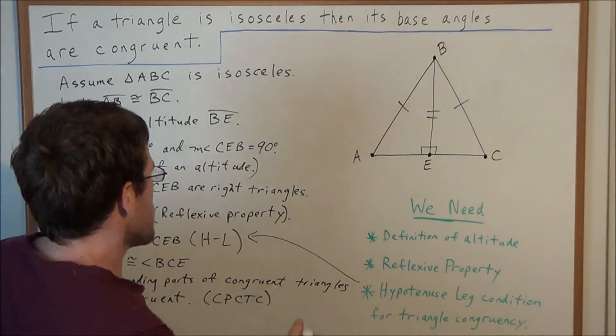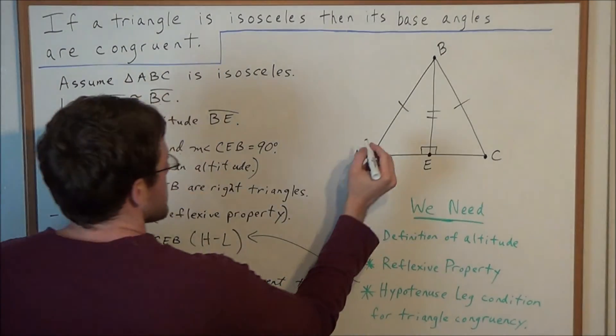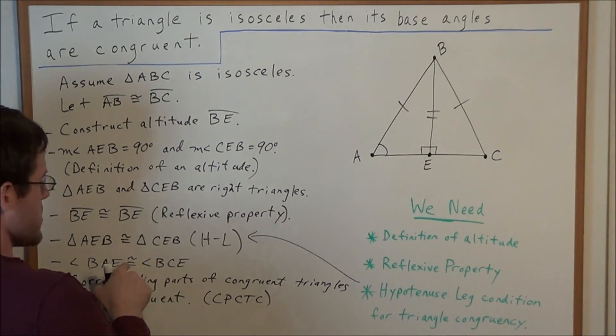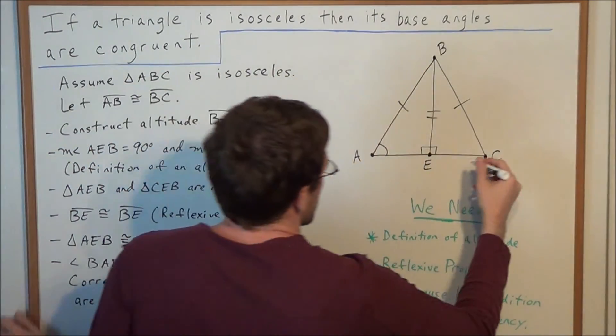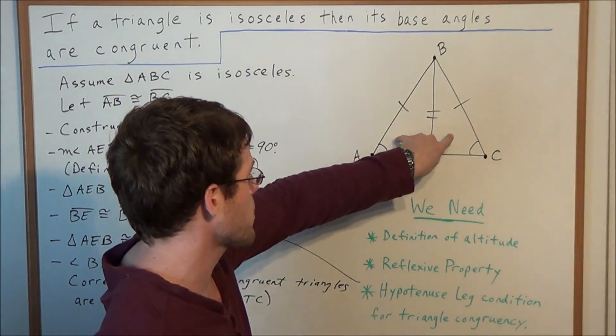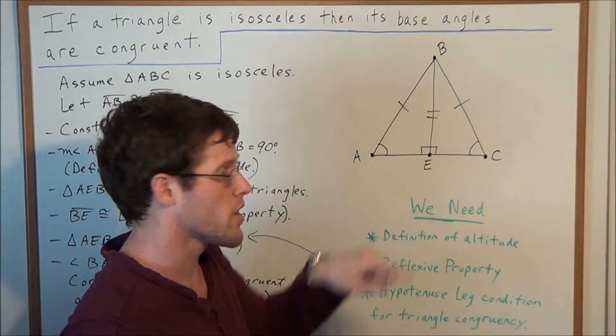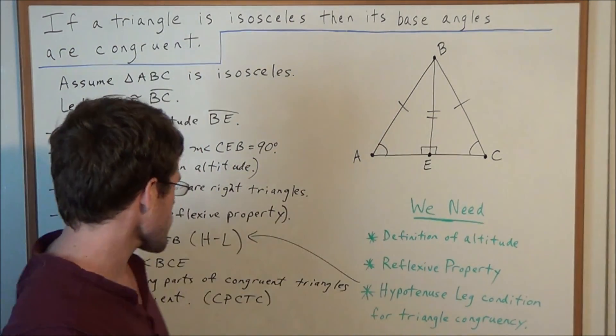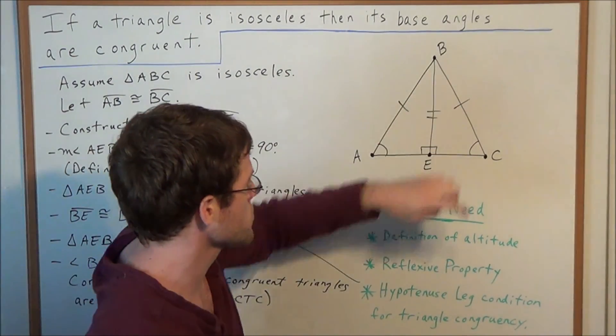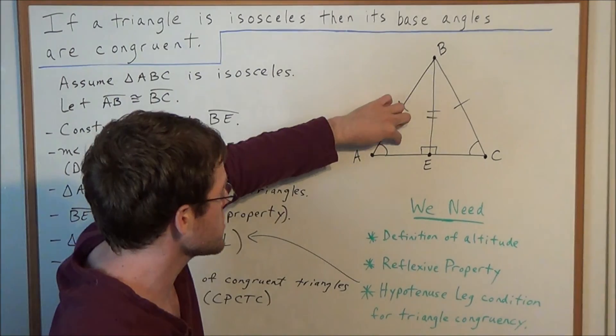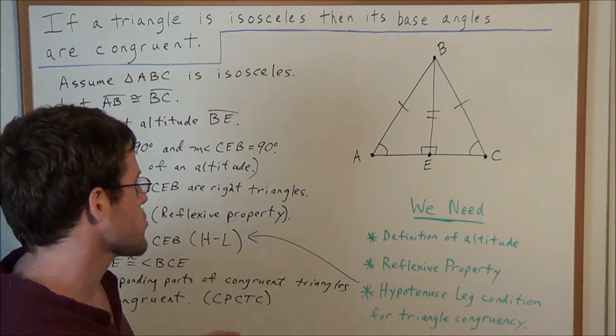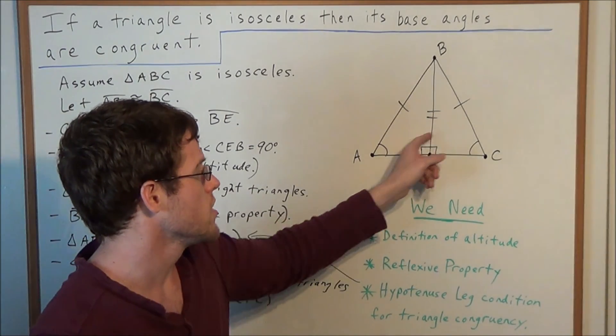So, this allows us, like we just said before, angle BAE and angle BCE are congruent. Because they're parts, they're corresponding parts of congruent triangles. So, using triangle proofs and showing that these two right triangles are congruent allows us to target these two base angles and show that they're corresponding parts of congruent triangles, thus they are congruent to each other.